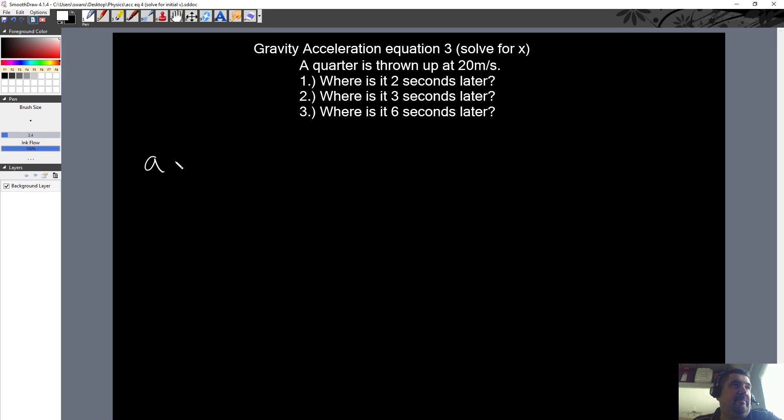First off, this is a gravity problem because you threw something. So acceleration is negative 9.8 meters per second squared. We know the initial velocity is going to be 20 meters per second positive because they threw it up. And we know time is equal to two seconds. And they want to know where is the object position-wise, displacement-wise, where is it from where it started?